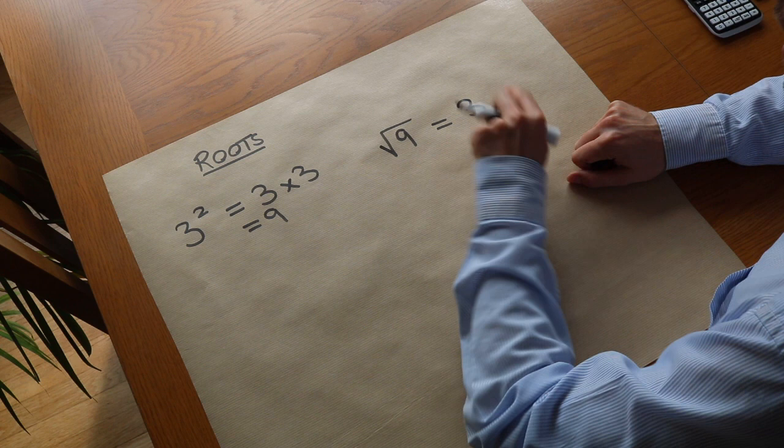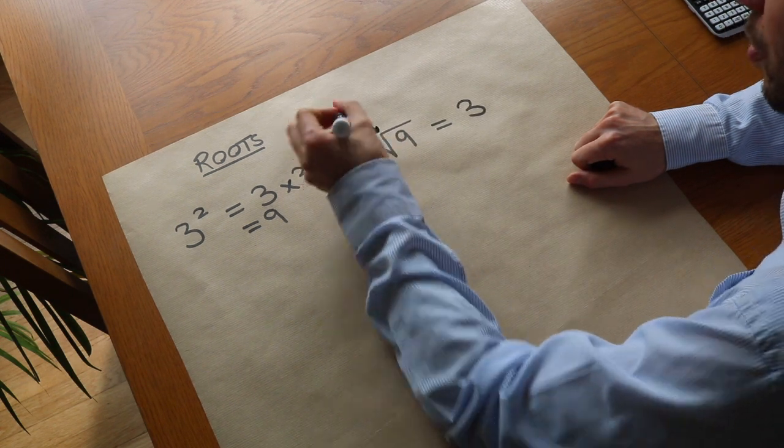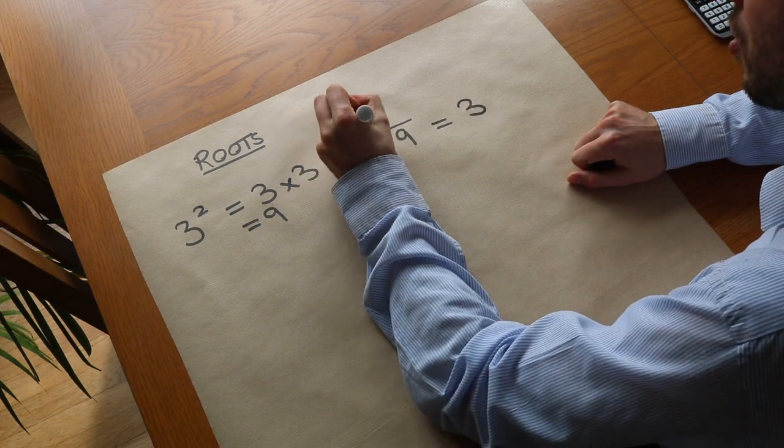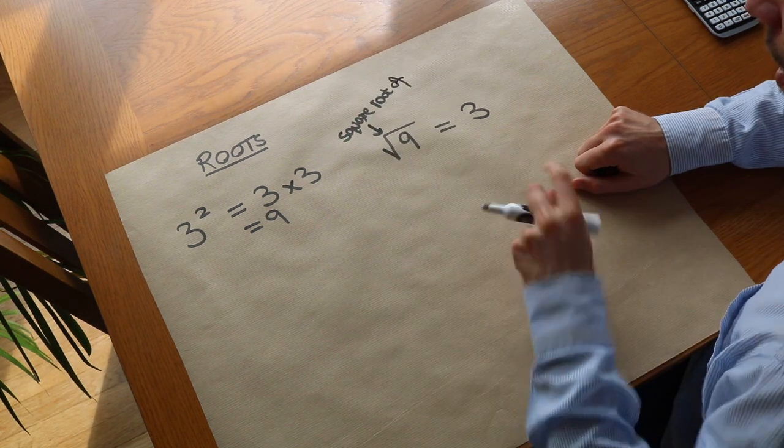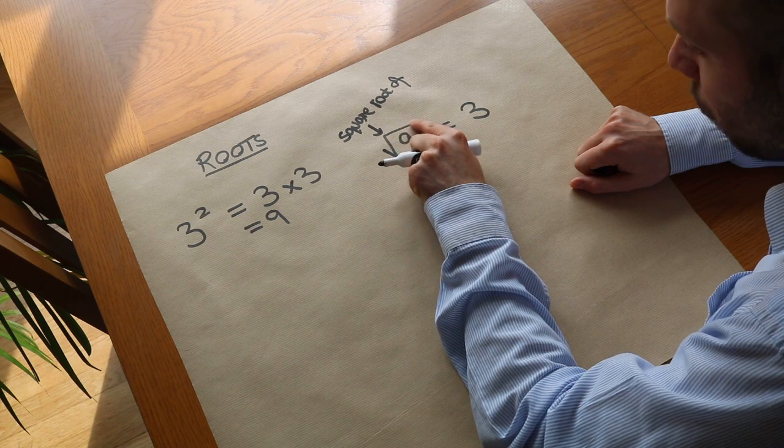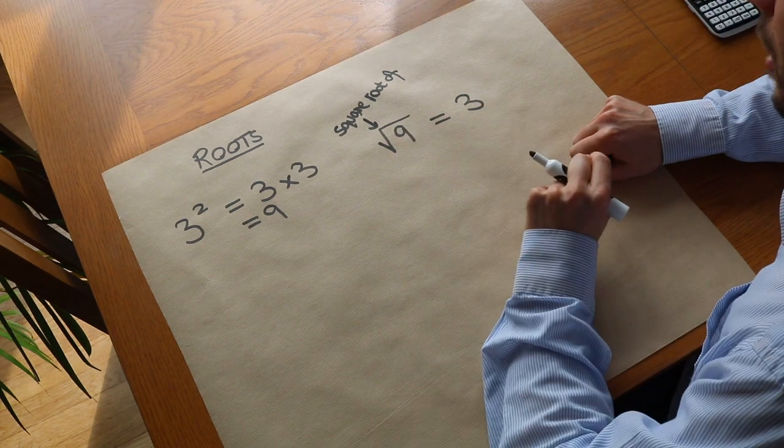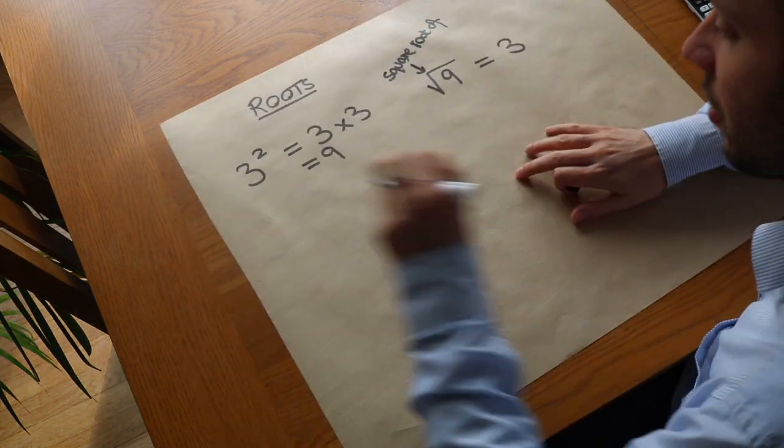So 3 squared equals 9 and the square root of 9 equals 3. We say this symbol as the square root of, and that line above has to go all the way over the number that you're square rooting. Let's do some more.